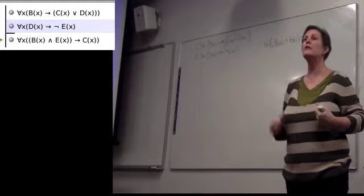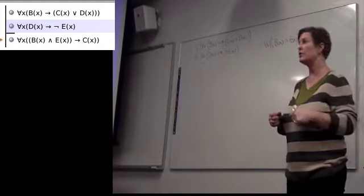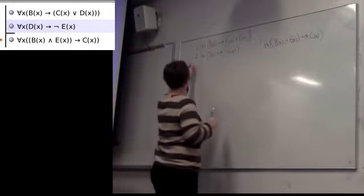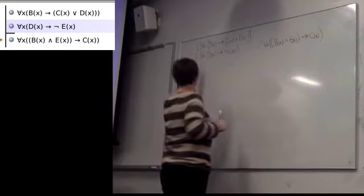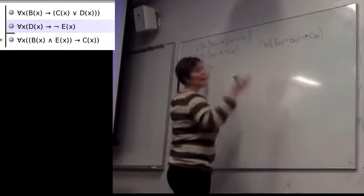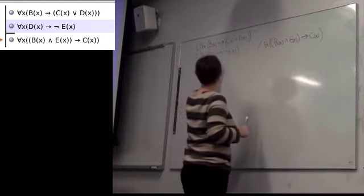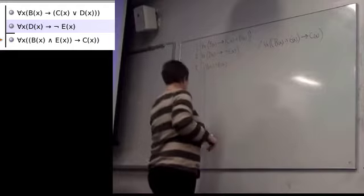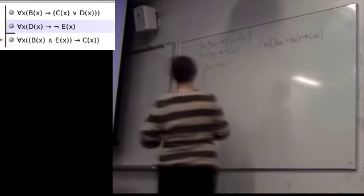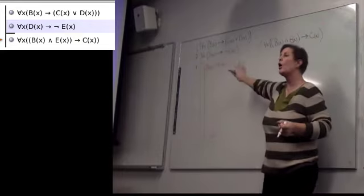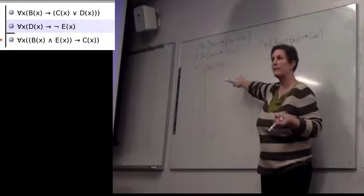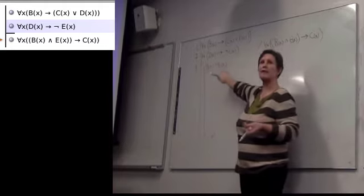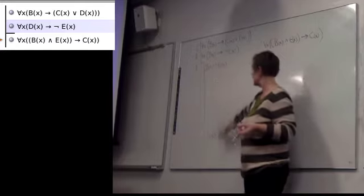This is just what you do. You set this up. When you want to achieve a conditional, you assume the antecedent, derive the consequence. So we're going to set up B, and I'm just grabbing A as the name — set up the antecedent — so that we can say, look, from any arbitrarily chosen name, we've proven that when that name is both a B and an E, it's a C.